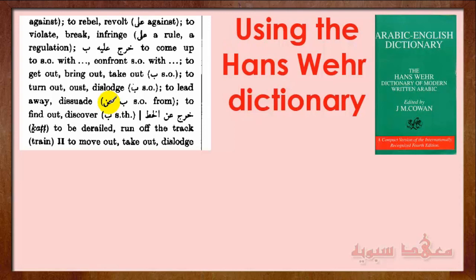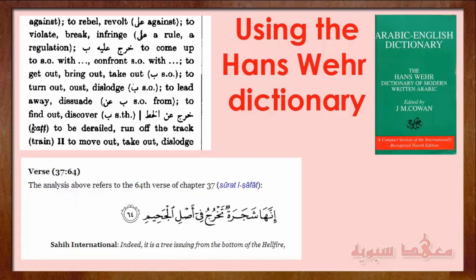Finally, خرجت عن الخط means to be derailed or run off the track — الخط is like a boundary, so this means to go outside the boundary. We'll cover the Form 2 verb later insha'Allah when we discuss the different verb forms. Now another حرف جر to discuss: we have this ayah in the Quran talking about شجرة الزقوم.